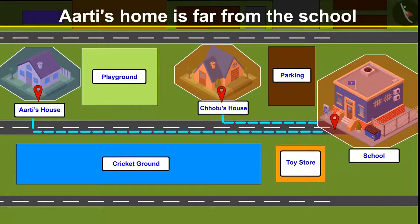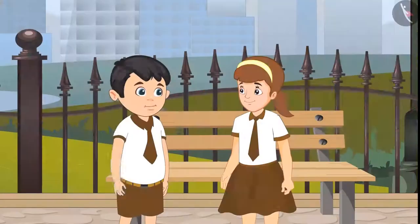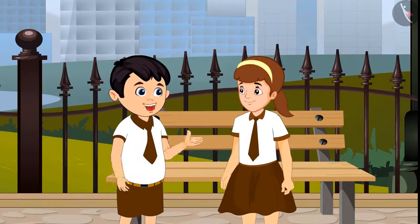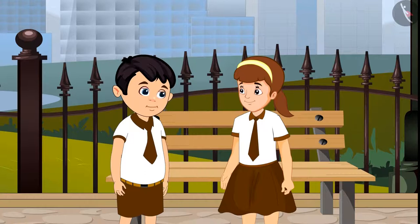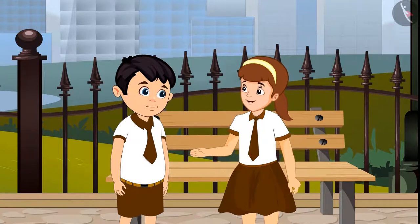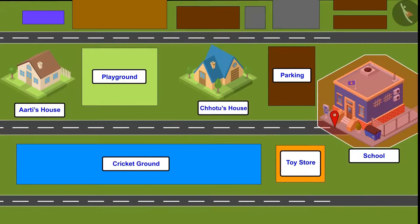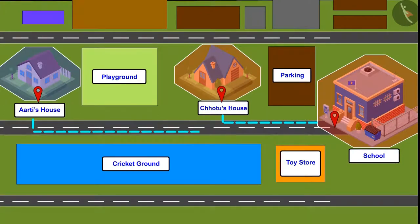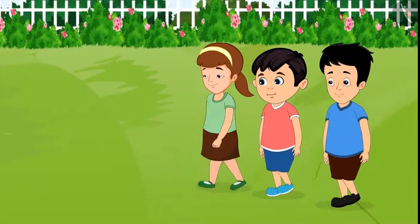'Aarti, my house is near the school and your house is far from the school. So that's why I reach home early and it takes you more time to reach home.' 'Okay, now I understood, Chotu.' So kids, did you see — Chotu's house is near the school and Aarti's house is far from the school. That is why it takes her more time than Chotu to reach home.